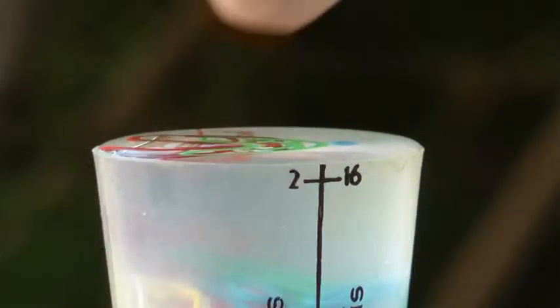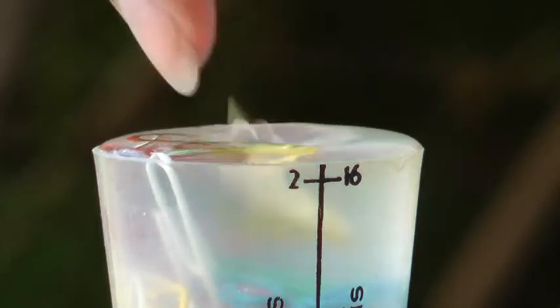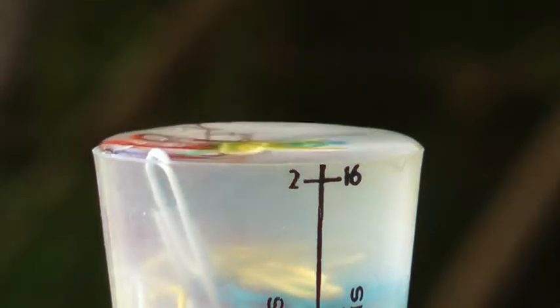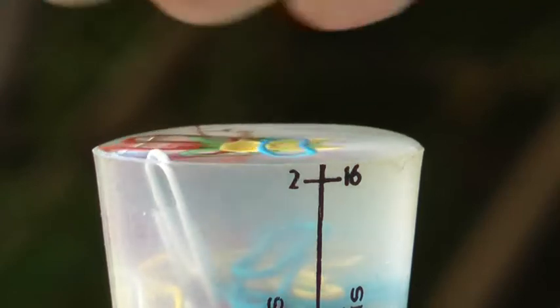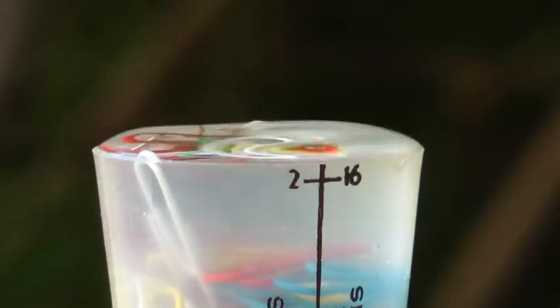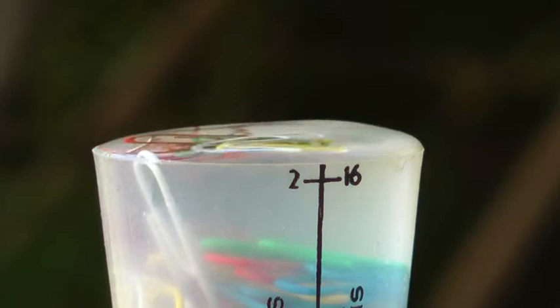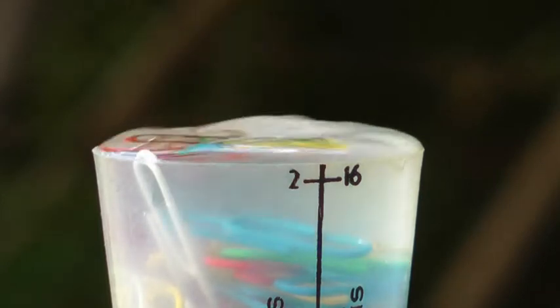Surface tension can be demonstrated by adding paper clips, one at a time, to a measuring cup of water until it overflows. The cumulative cohesive force of each molecule on the surface acts towards the centre of the water.